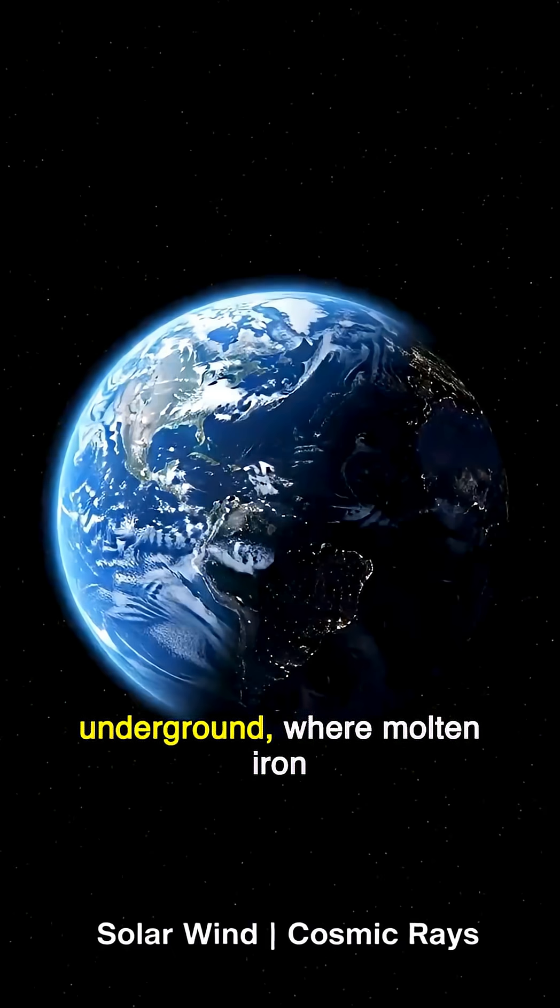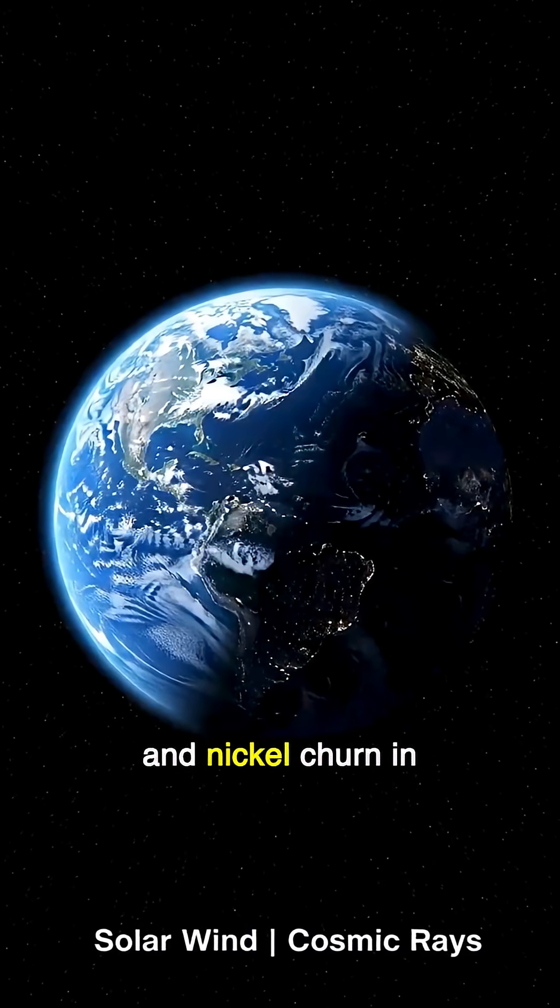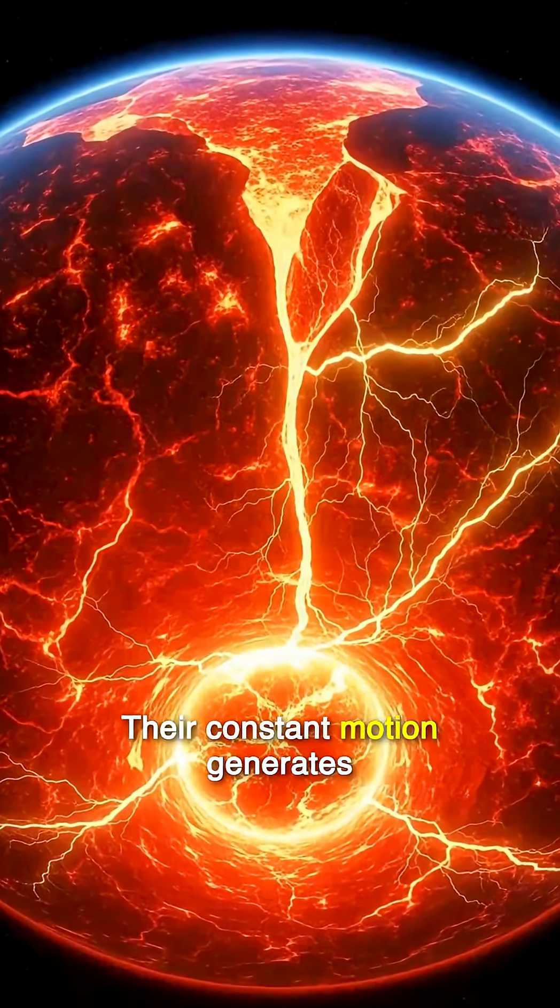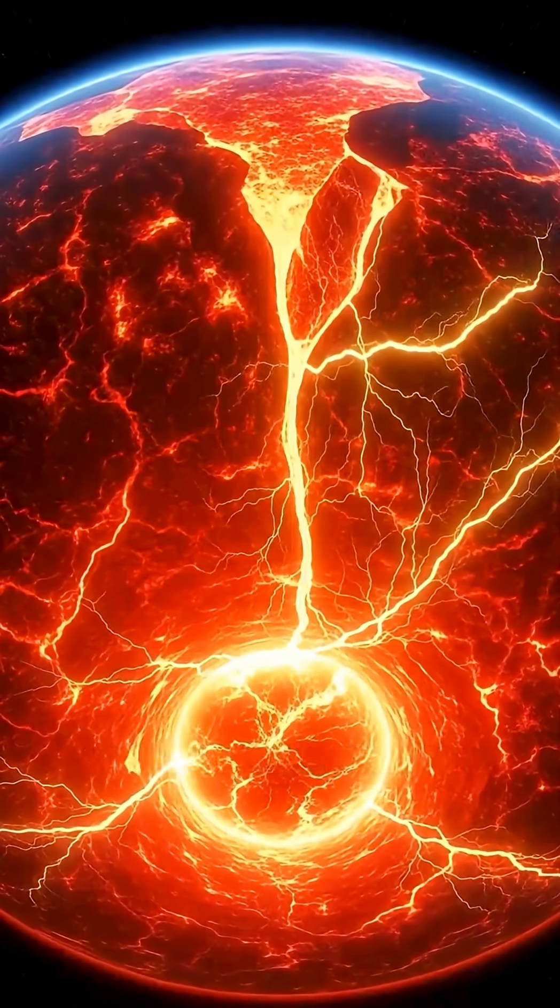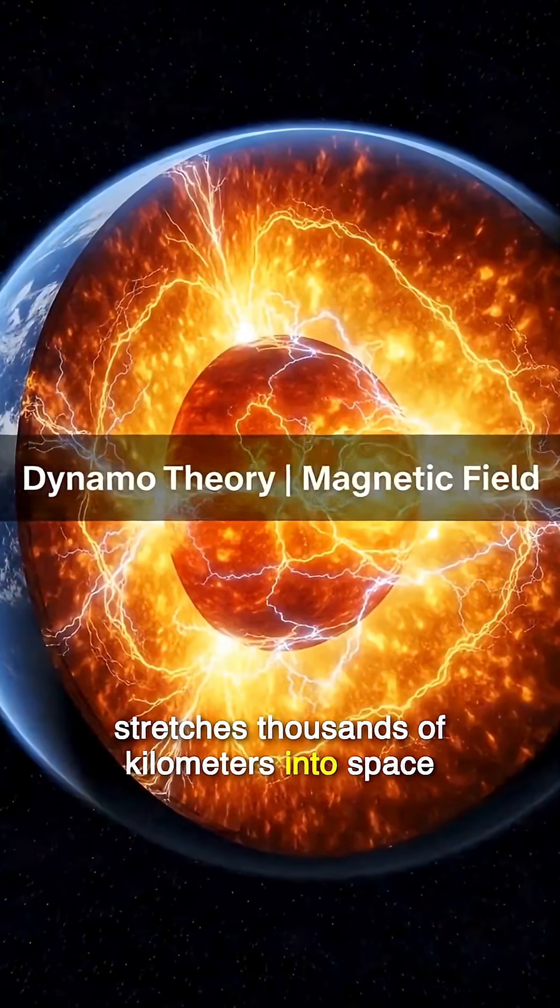This field begins deep underground, where molten iron and nickel churn in the planet's outer core. Their constant motion generates electric currents, creating a vast magnetic field that stretches thousands of kilometers into space.